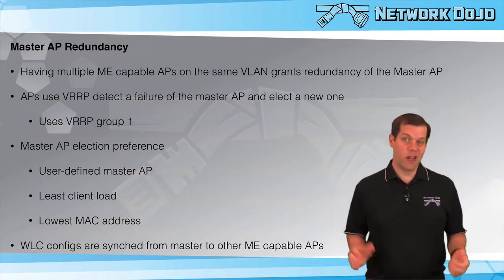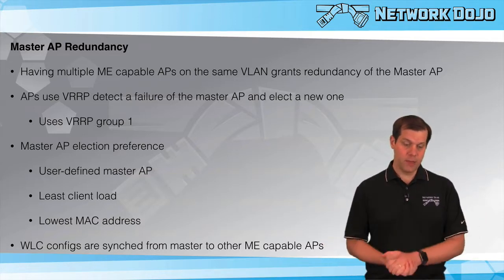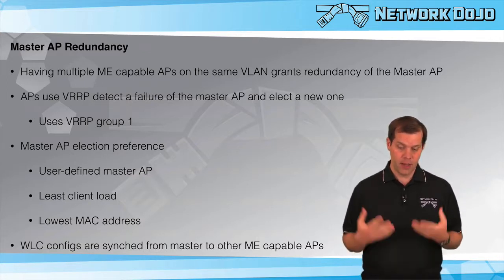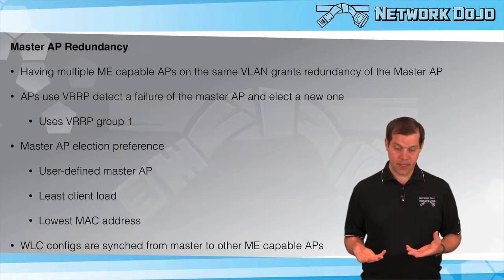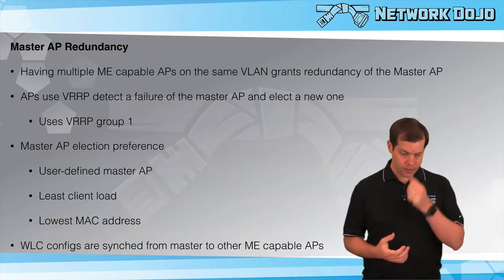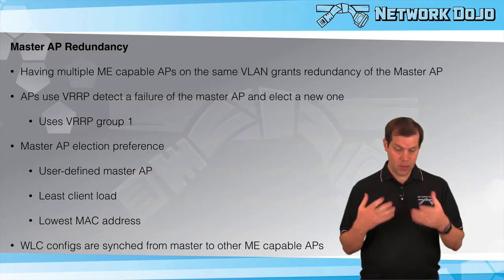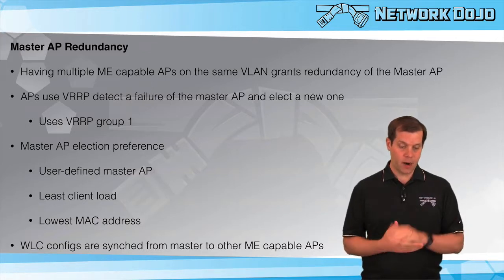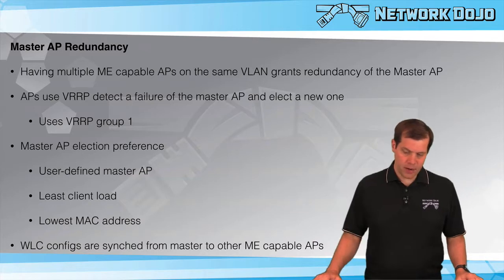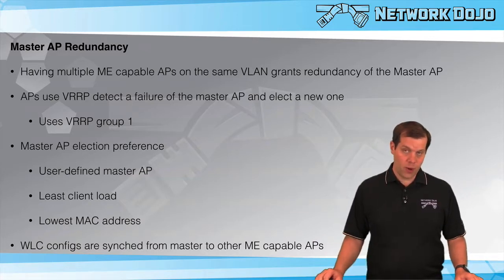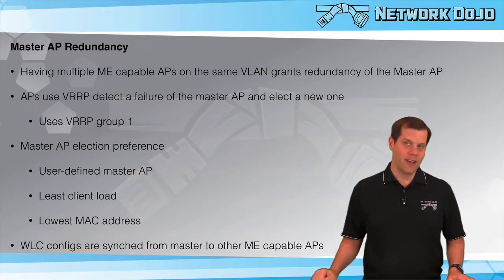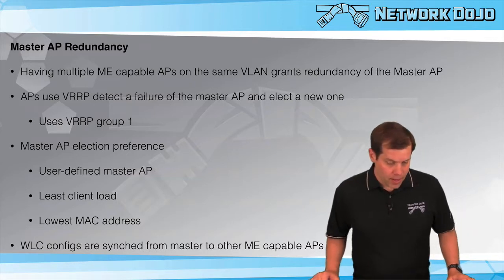What about redundancy? APs can go down. We do have the ability to have redundancy for the master AP, because we can have multiple Mobility Express capable APs on the same VLAN. They can back each other up, and that's built into the Mobility Express process. The Mobility Express capable APs use VRRP — a first-hop redundancy protocol — to detect failure of the master AP and elect a new one. It uses VRRP group one, so if you use VRRP on your switches, don't use group one or it will conflict.